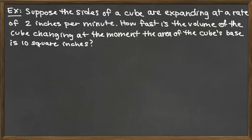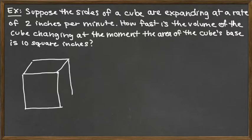Suppose the sides of a cube are expanding. So the object we're looking at here is a cube, and a cube has square faces, and all of the dimensions are going to be equal. So if we call one dimension X, the other two are also X.